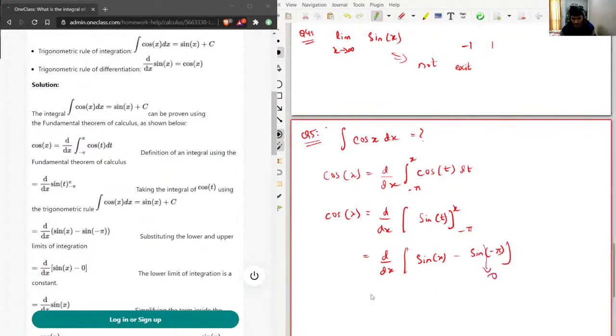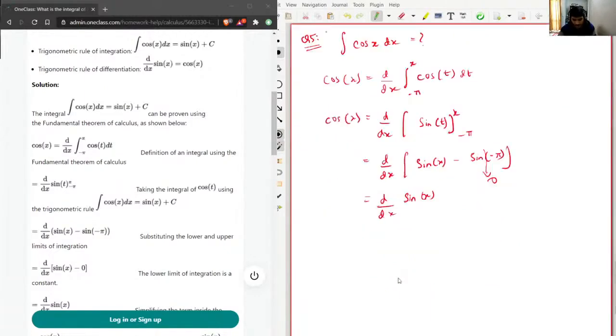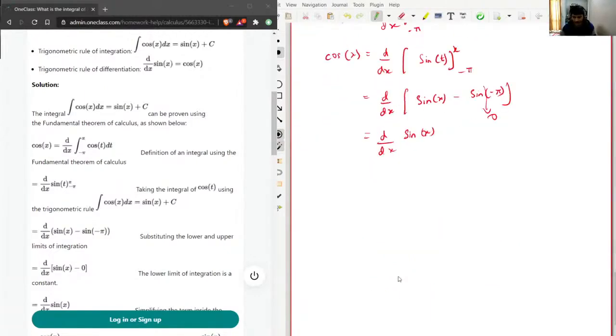And this will become d/dx of sine of x, and again derivative of sine x is cosine x, so this will become cosine x. And hence LHS is equal to RHS.